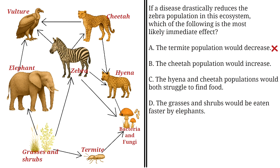B: The cheetah population would increase. This is incorrect. According to the diagram, cheetahs feed on zebras. So a drastic reduction in zebras would decrease their food availability, which would likely lead to a decline in their population, and not an increase.